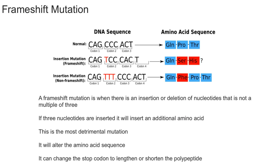A key point is that the number of nucleotides inserted is not a multiple of three. That's important because if you instead add three T nucleotides — which is a multiple of three — it's not going to create a frameshift mutation. It's just going to add another amino acid, in this case a phenylalanine.